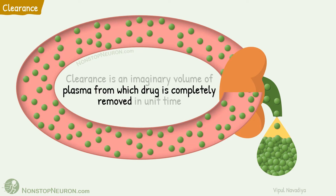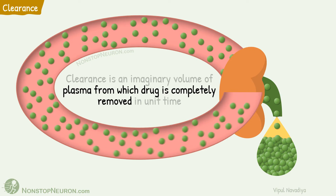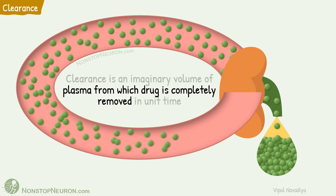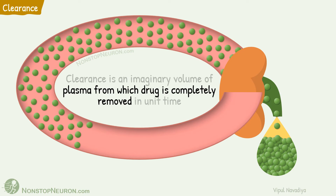But as per definition, we want plasma from which drug is completely removed. As such plasma never occurs in reality, we create such a portion by imagination. Here we assume that in some portion of plasma, drug is retained as it is at the same concentration as in the beginning, and from some portion it is completely removed. So we can say this much plasma was completely cleared of drug in one minute.